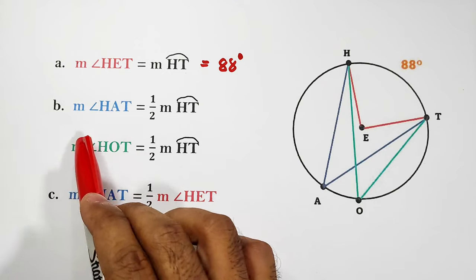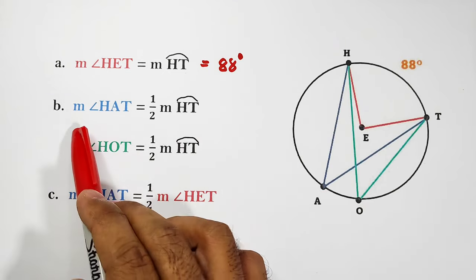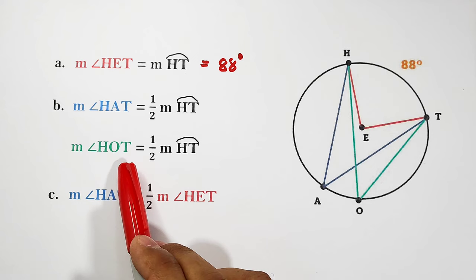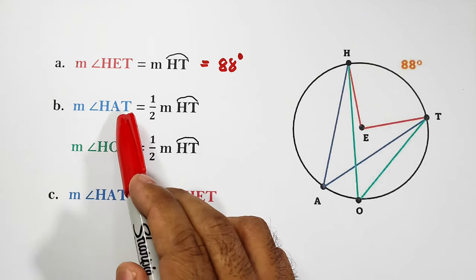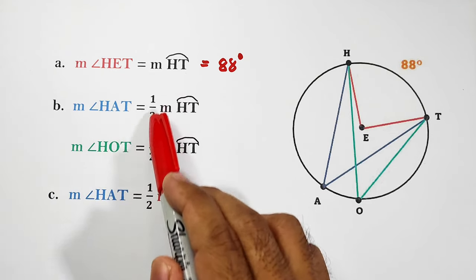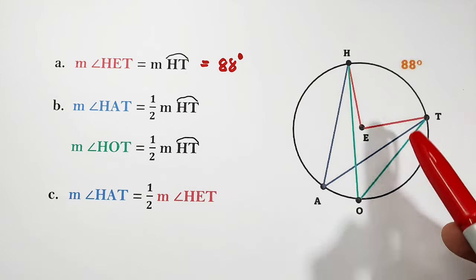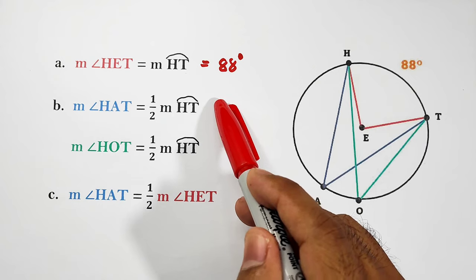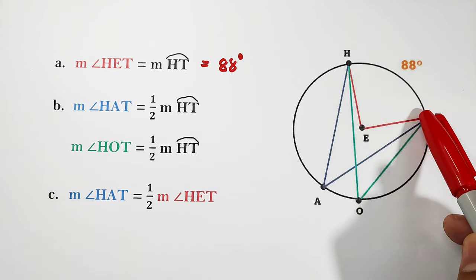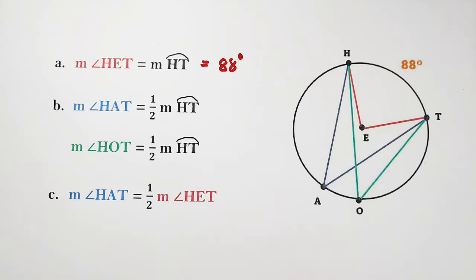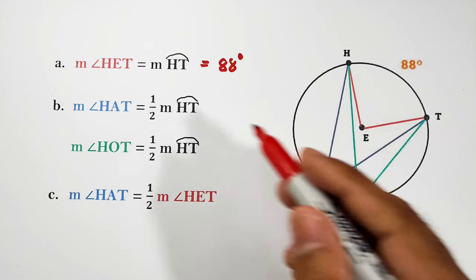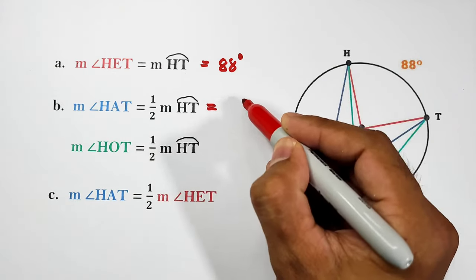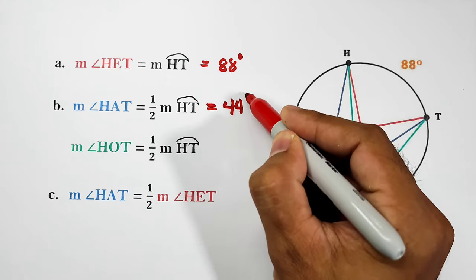For letter B, we have the inscribed angles — angle HET and angle HOT. The measure of angle HET is equal to one half of the intercepted arc. Our intercepted arc here is arc HT. Since the measure of arc HT is 88 degrees, therefore the measure of angle HET is equal to 44 degrees.